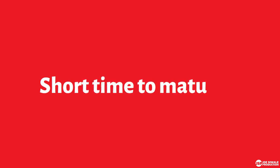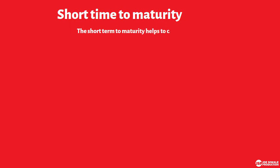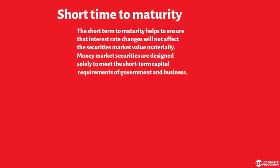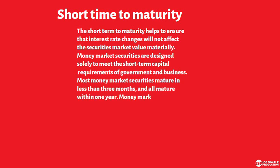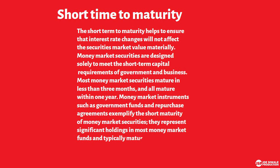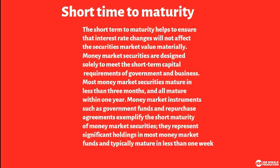Another characteristic is short term to maturity. The short term to maturity helps to ensure that interest rate changes will not affect the security's market value. Money market securities are designed to meet the short term capital requirements of government and business. Most money market securities mature in less than three months and all mature within one year. Instruments such as government funds and repurchase agreements typically mature in less than one week.